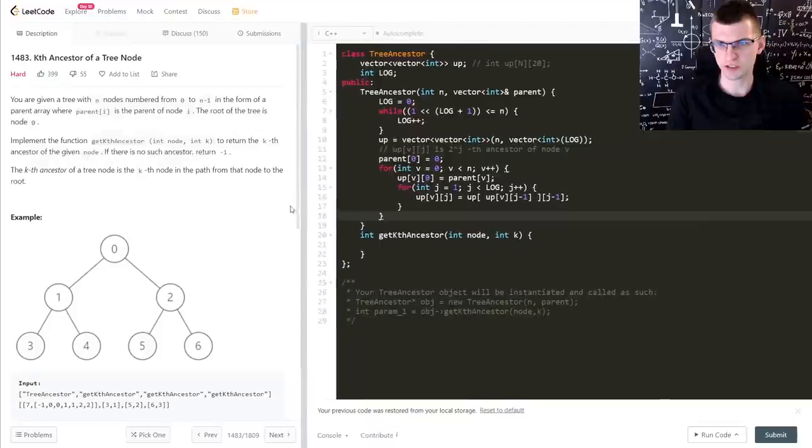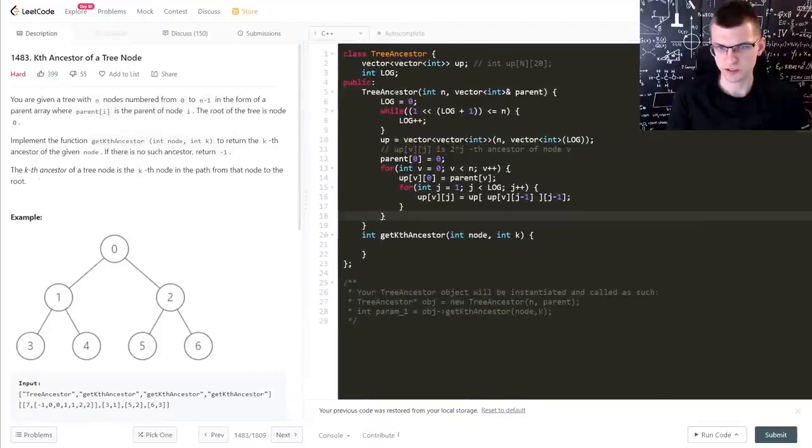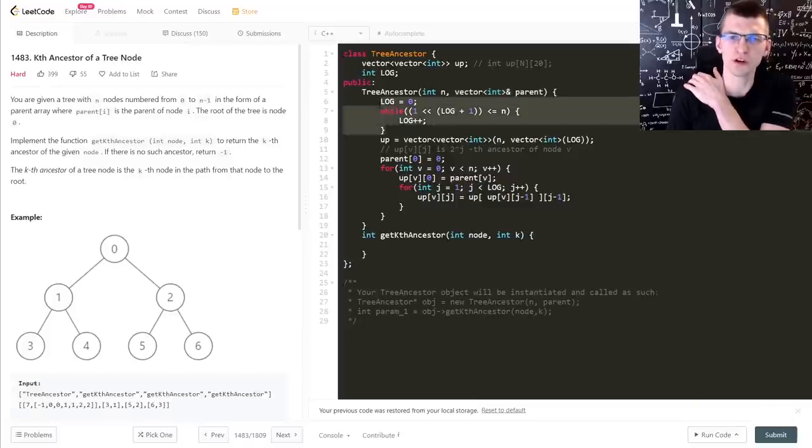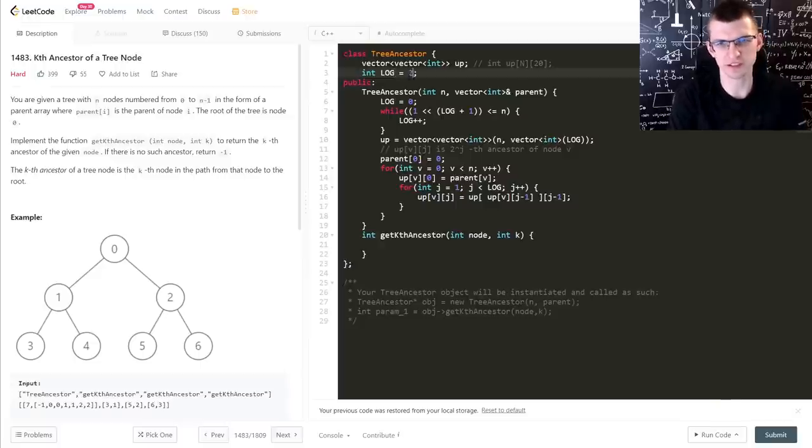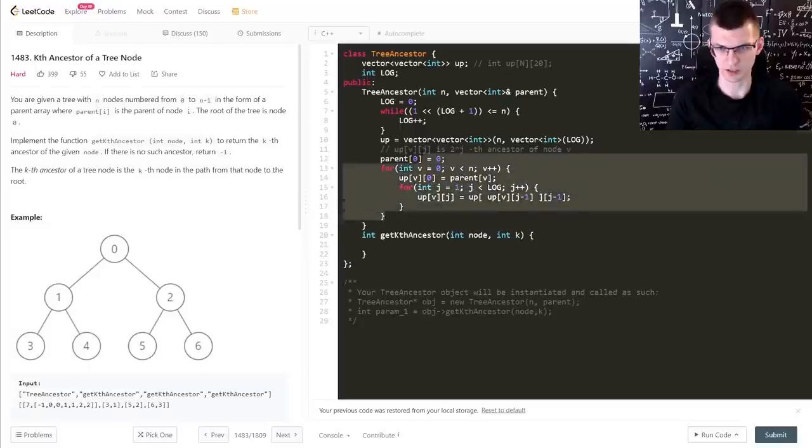What I already coded is the preprocessing part. There is here the constructor, which gets the array of parents. I here compute logarithm of n. That's not really necessary. Knowing constraints, I could just here put that hard code that it is always 20, but you know, it's nicer not to use 20 if it's not possible. 20 is logarithm of million, so it's more than we need. There is that array up two dimensional one, n by 20. And we have the two nested for loops in n log n complexity.